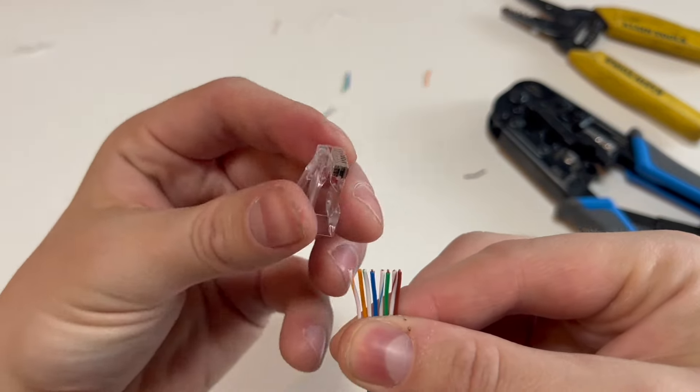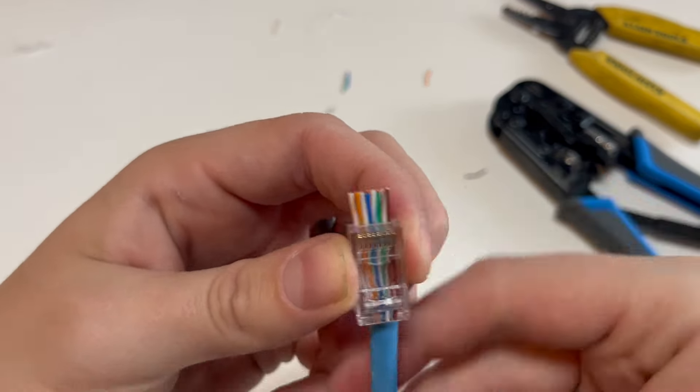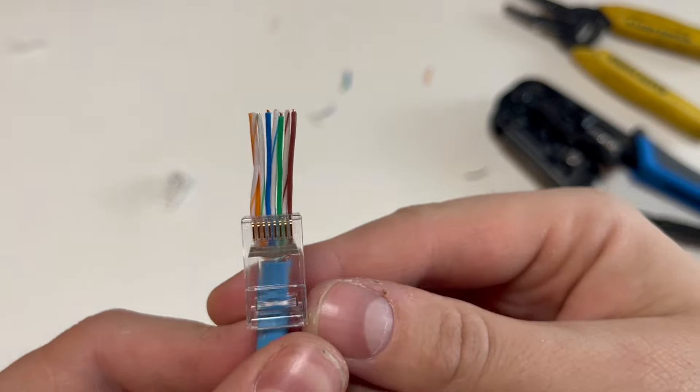With the flat side of the connector facing towards you, press the wire through, then double check the order of the wires coming out of the end.